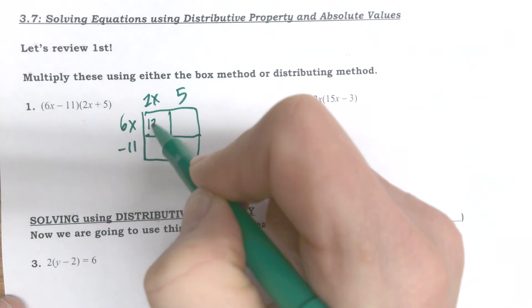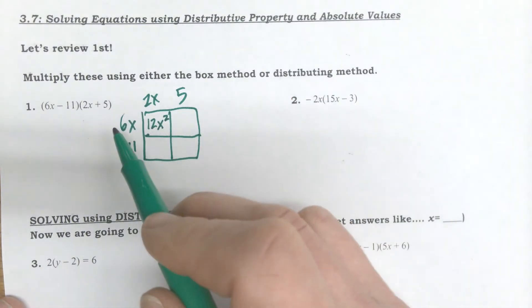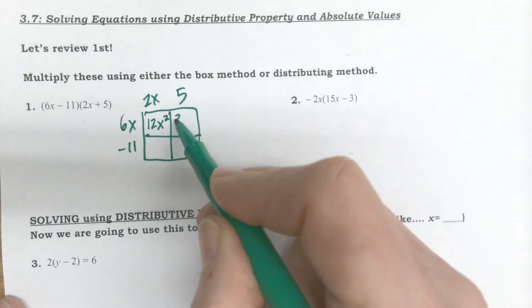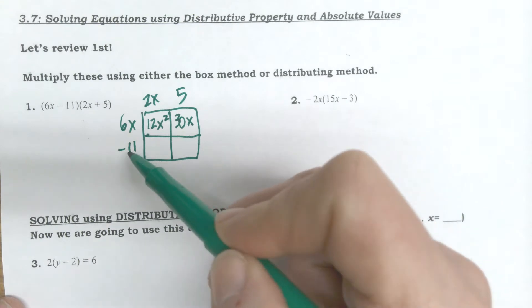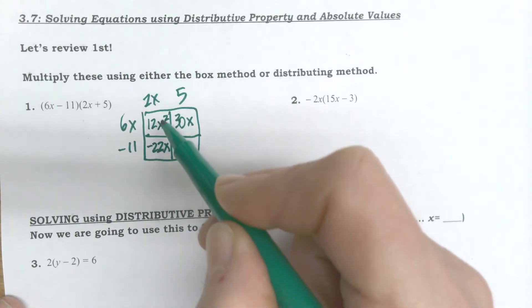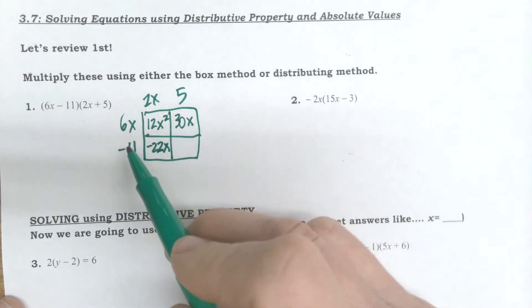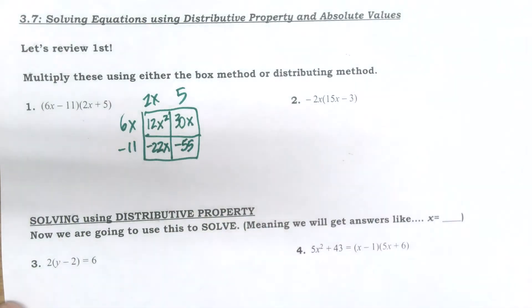Six times two is twelve, x times x is x squared. Six times five is thirty, and then I have one x there. Negative eleven times two is negative twenty-two, and I put the x at the end because I added two x. And then negative eleven times five, negative fifty-five.